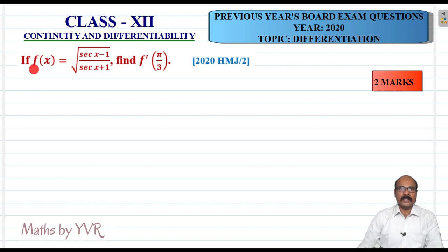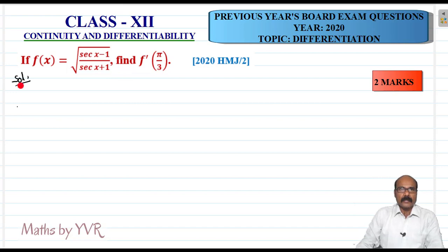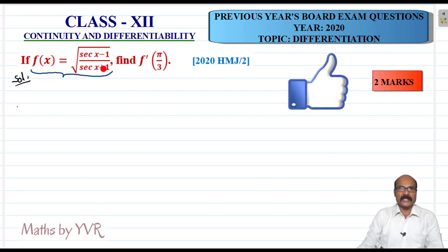Look at this question. If f(x) is equal to square root of (sec x minus 1) by (sec x plus 1), then find f'(π/3). Let us discuss the solution. The given f(x) is equal to square root of (sec x minus 1) by (sec x plus 1).